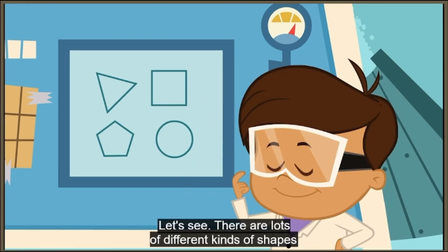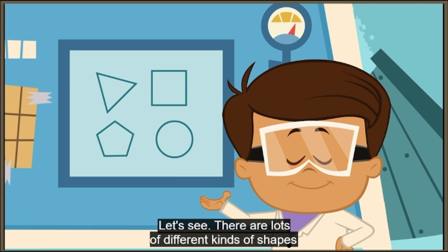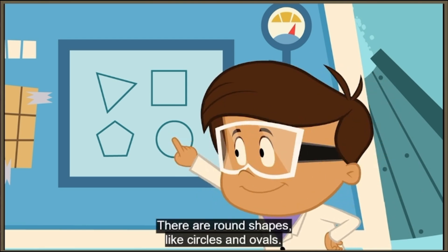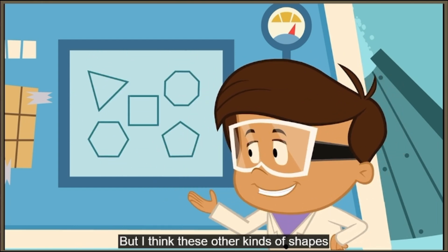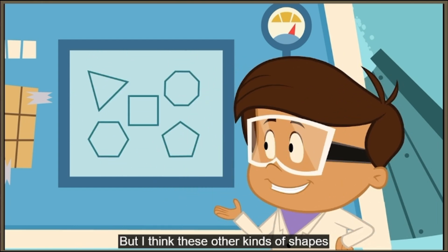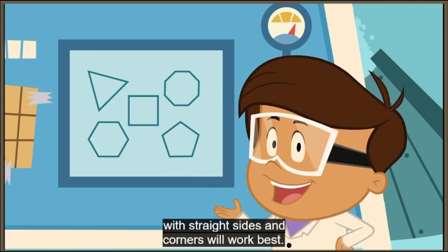Let's see. There are lots of different kinds of shapes I can use to make Rascal's new dog house. There are round shapes like circles and ovals, but I think these other kinds of shapes with straight sides and corners will work best.